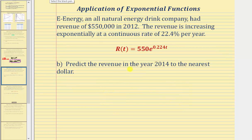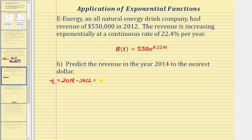For part b, we're asked to predict the revenue in the year 2014 to the nearest dollar. 2014 is two years after 2012, so we evaluate r of t when t equals two. We can determine t by taking the desired year, 2014, and subtracting the base year, 2012, which gives t equals 2. So r of 2 equals 550 times e raised to the power of 0.224 times 2. Remember, r of t is in thousands of dollars, so now we'll go to the calculator.